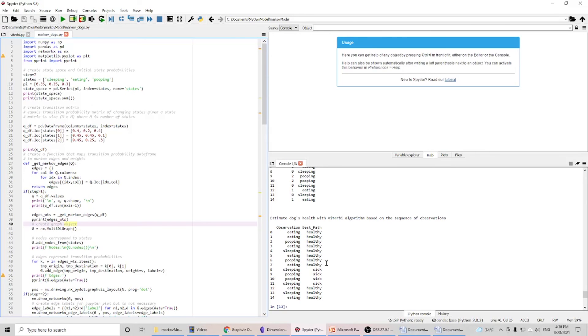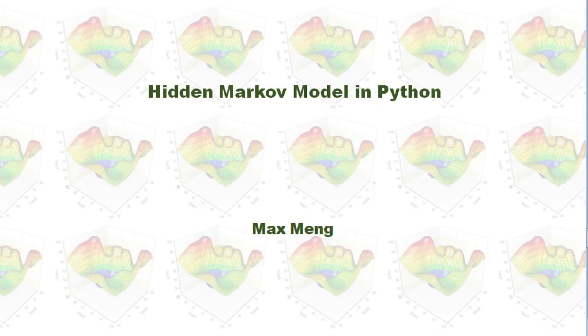After that, the dog is sick. And when the dog reaches step 12, the dog gets healthy again. This is how I build and use Hidden Markov Model in Python.